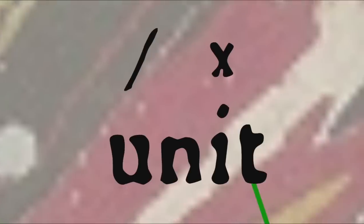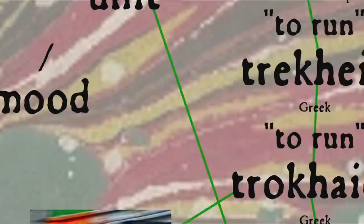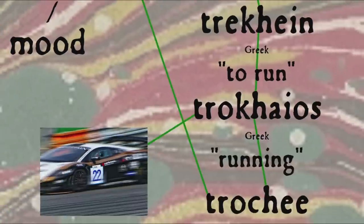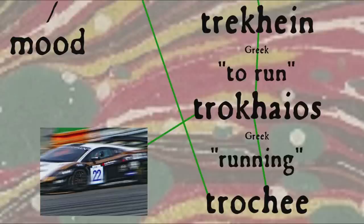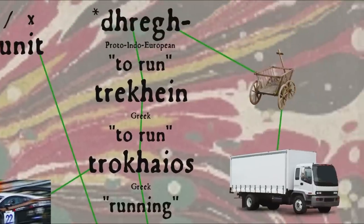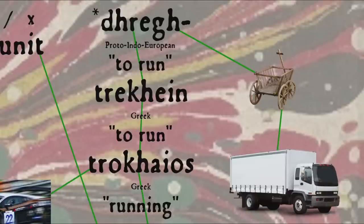Next, the trochee is the opposite of an iamb, a foot made up of a stressed syllable followed by an unstressed syllable, as in the word unit. The word trochee comes from Greek trochaios pous, literally, running foot, from the verb trechein, to run, presumably because it was felt to be a very quickly moving meter, ultimately from the root dreg, to run, from which we also get the word truck, originally in the sense of a little wheel, but later being used to refer to a wheeled vehicle for carrying heavy loads.